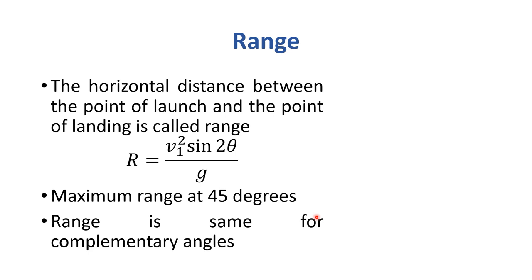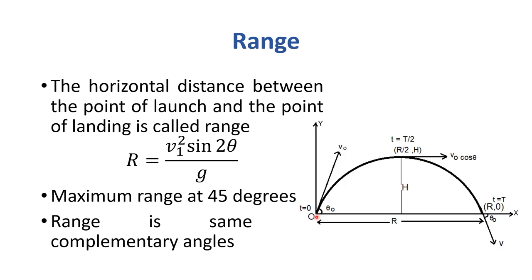Also, the range is the same for complementary angles — angles that add up to 90 degrees. For example, if one angle is 30°, its complementary angle is 60°, since 30 + 60 = 90. In the diagram, the horizontal distance from point of launch to point of landing is the range.